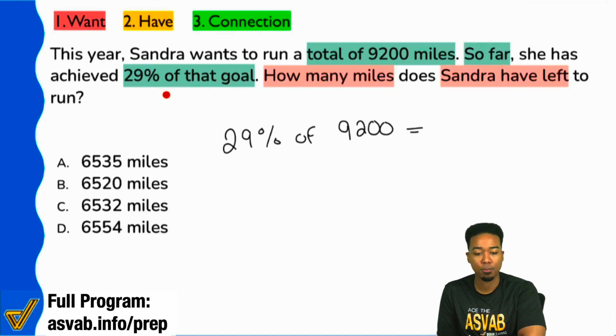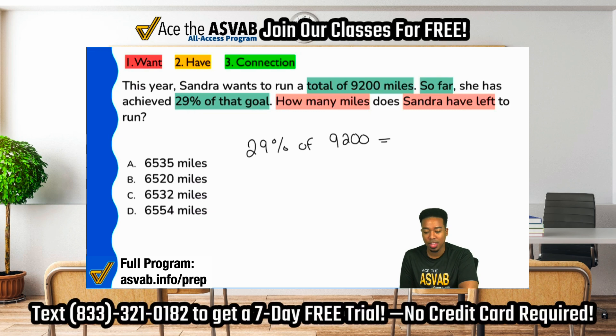No, 29% does not represent the goal. 100% represents the goal. What does the 29% represent? Correct. Yes, the 29% represents what's been done so far. The 29% tells you what we have achieved so far.